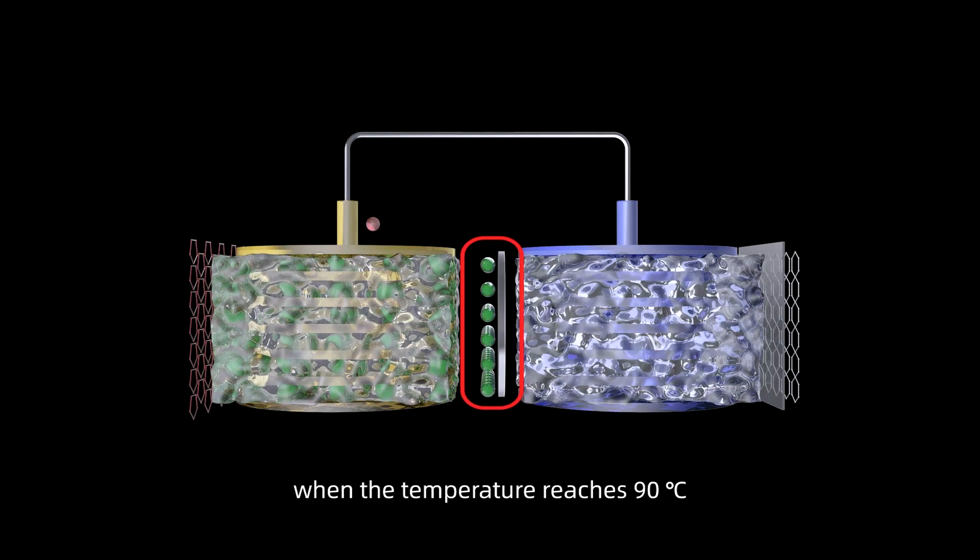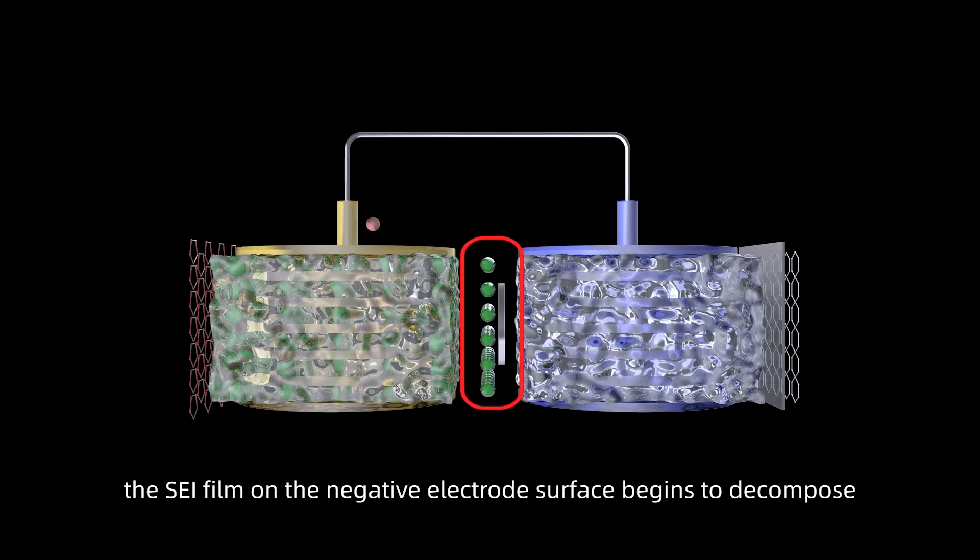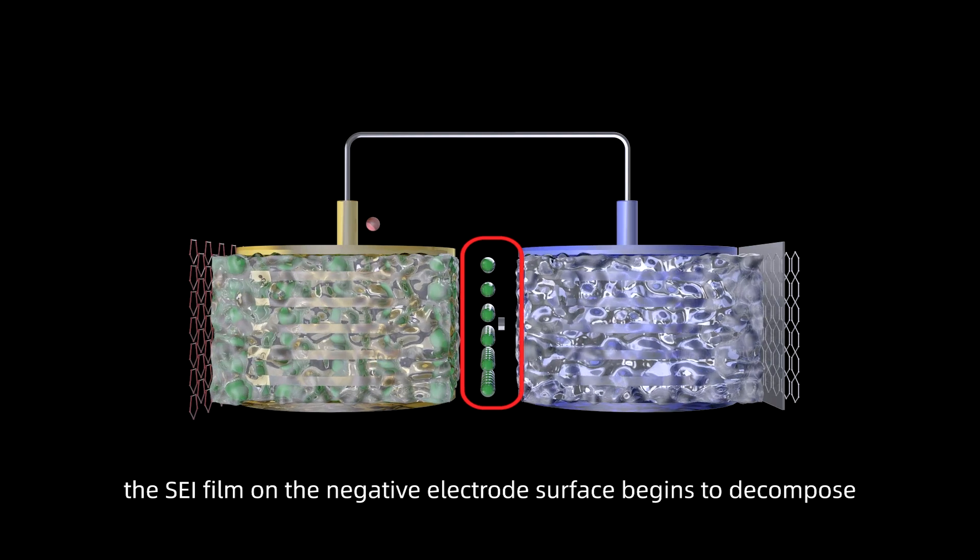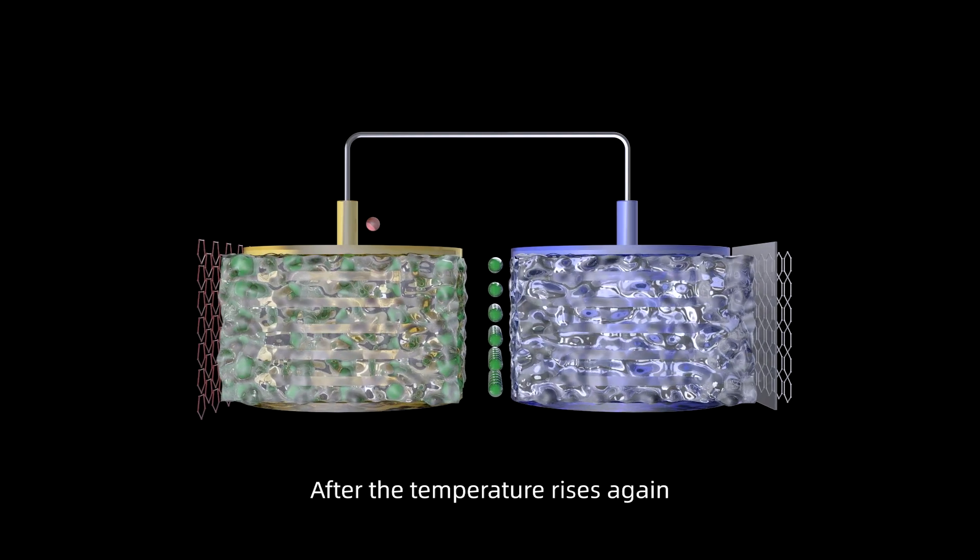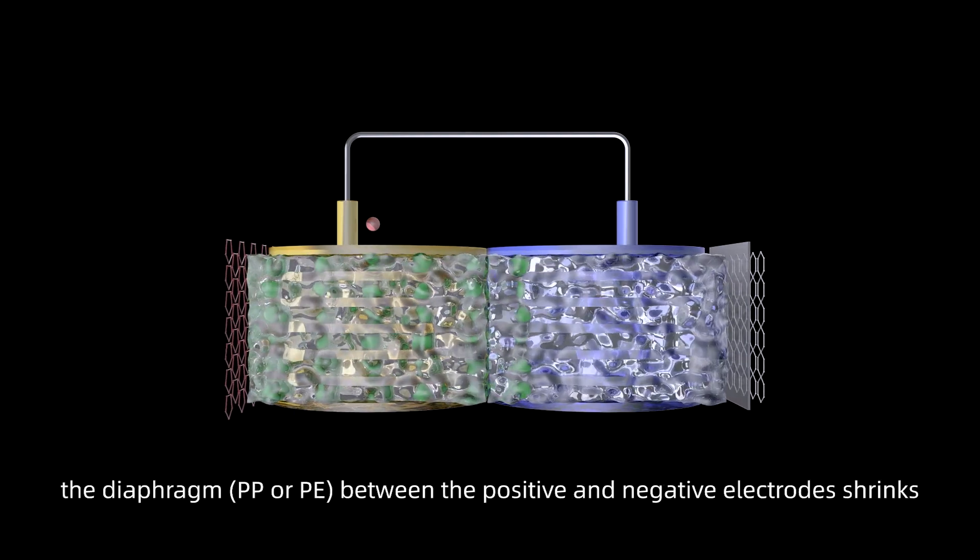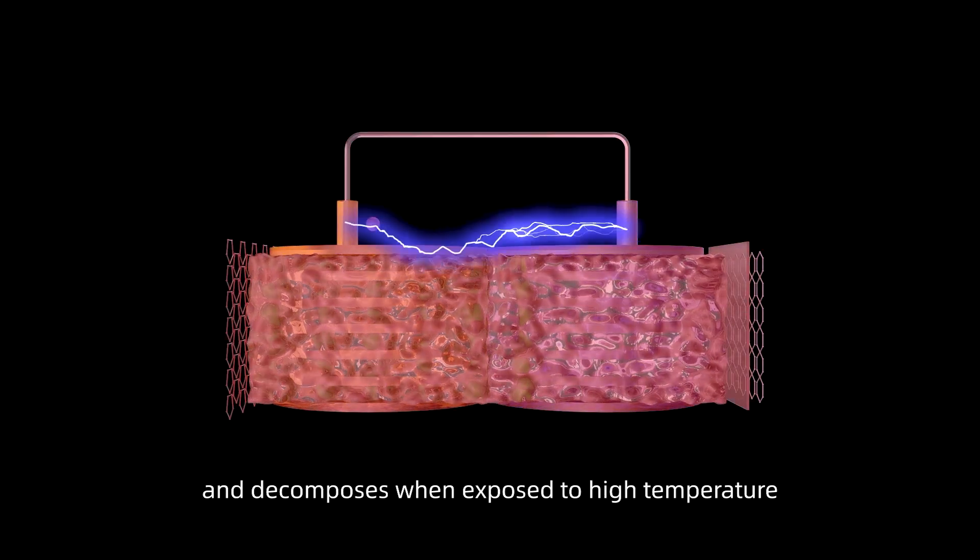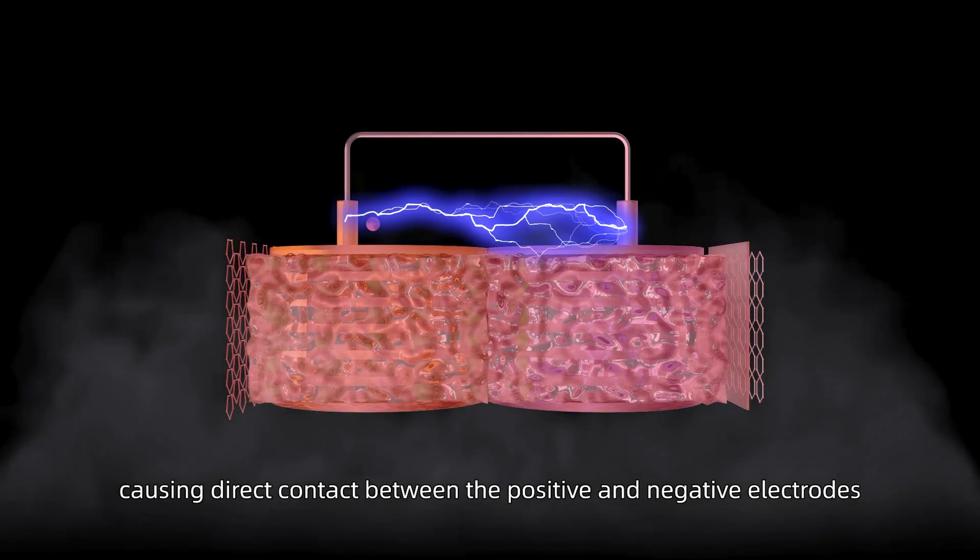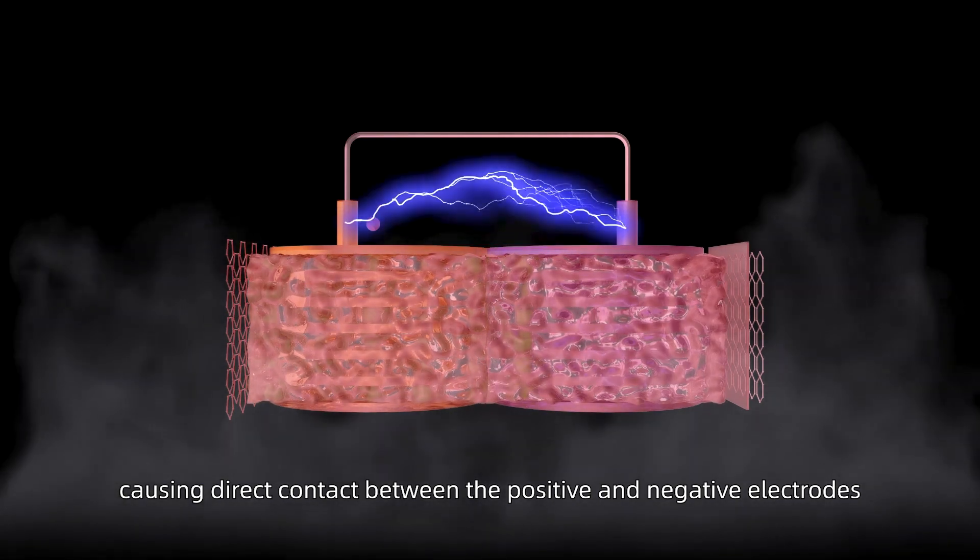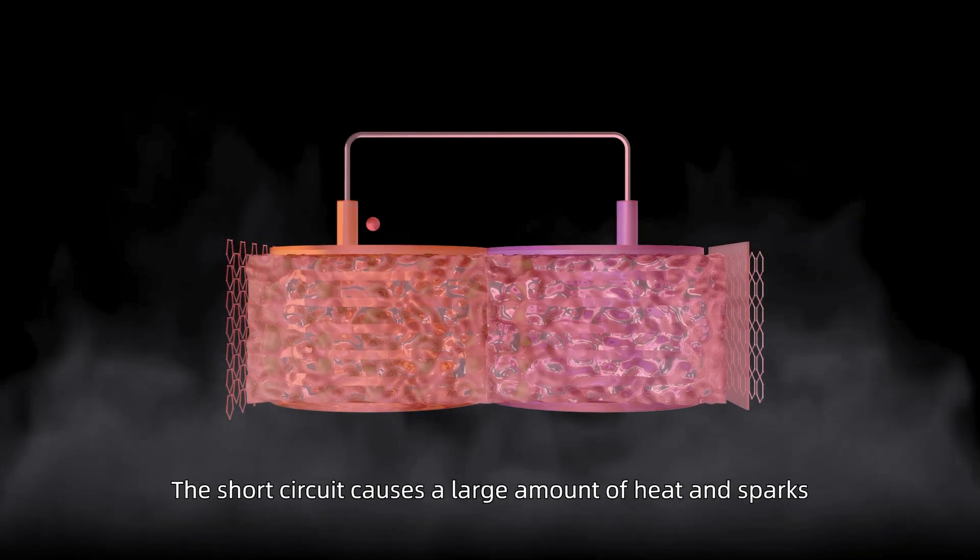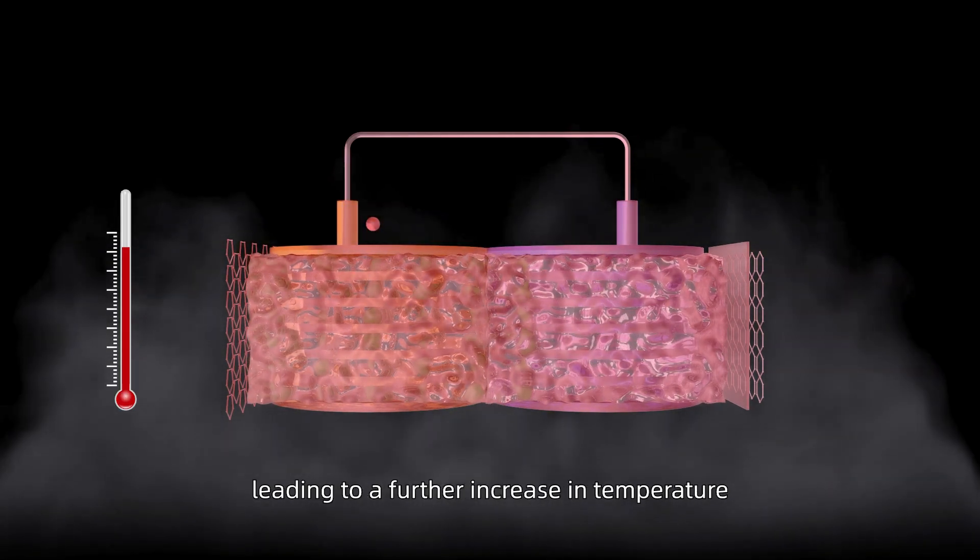when the temperature reaches 90 degrees, the SEI film on the negative electrode surface begins to decompose. After the temperature rises again, the diaphragm between the positive and negative electrodes shrinks and decomposes when exposed to high temperature, causing direct contact between the positive and negative electrodes. The short circuit causes a large amount of heat and sparks, leading to a further increase in temperature.